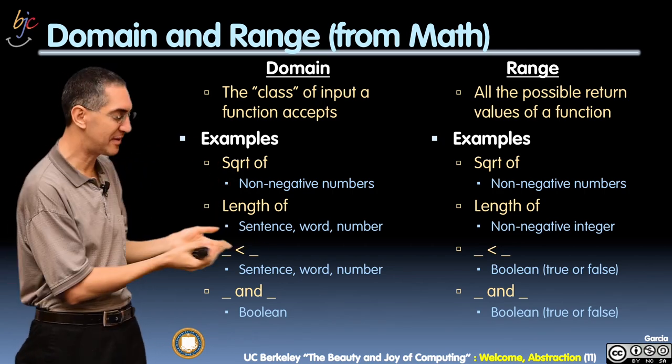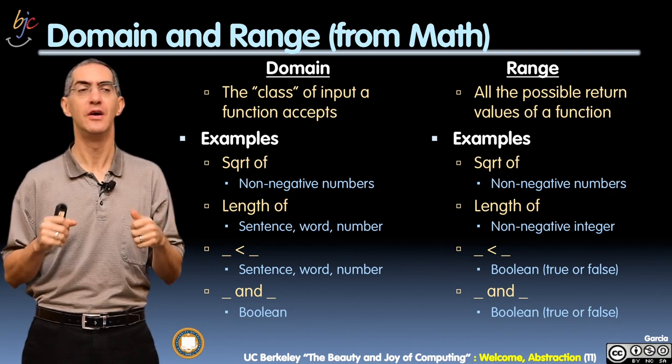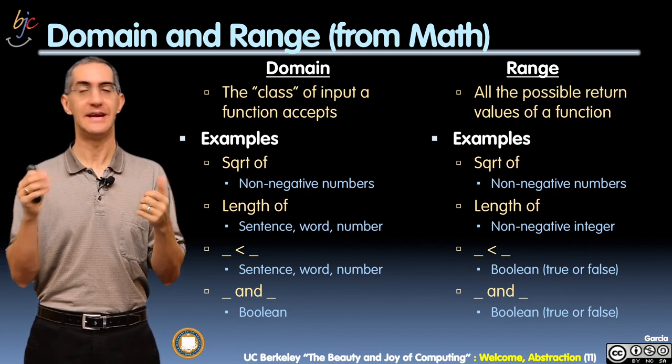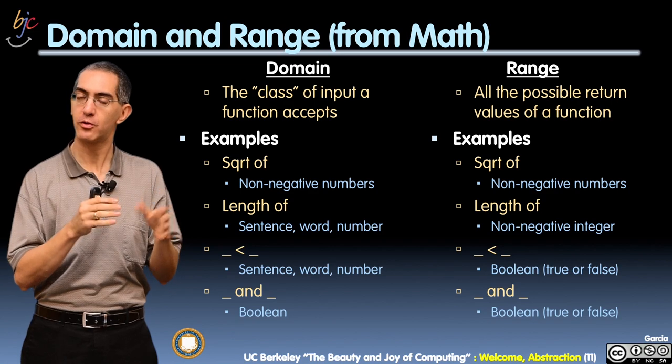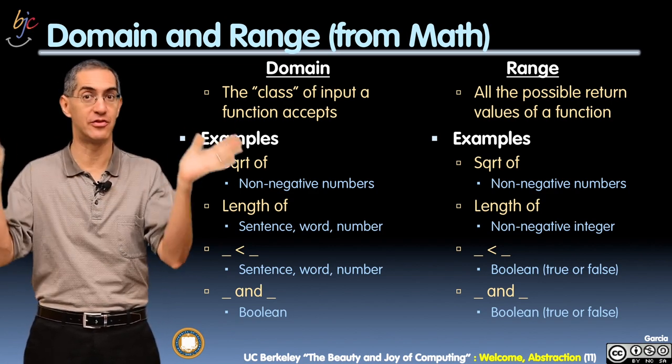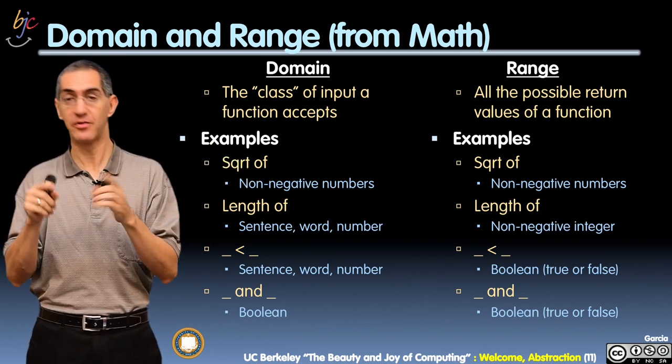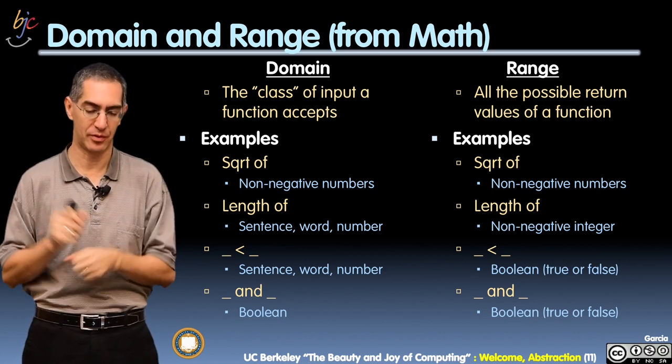Here's some example functions and what their domain and range are. Square root: the square root function, mathematical function, cannot handle negative numbers. It can't do the complex thing you probably learned in math class. So square root here we're going to limit to only non-negative numbers, but it doesn't have to be integers. It can be 1.2. But it can't be negative anything. The output is the same class, also non-negative numbers.